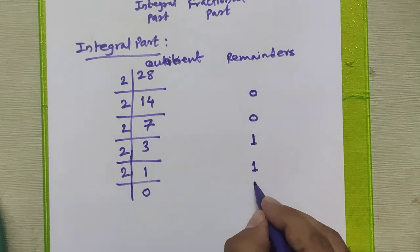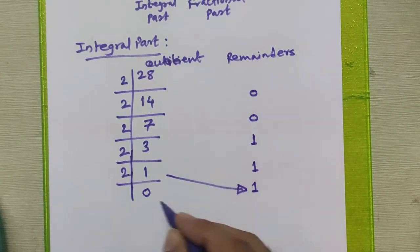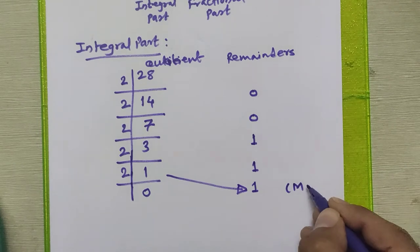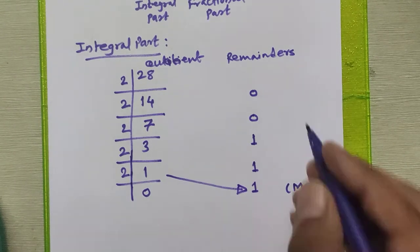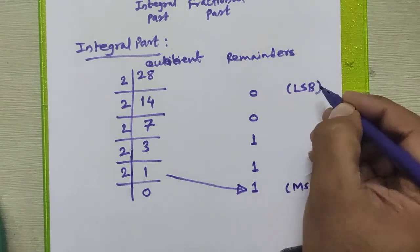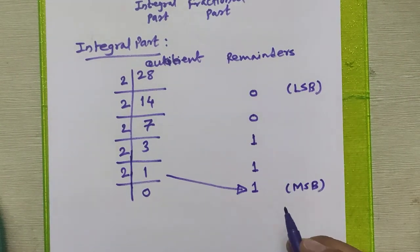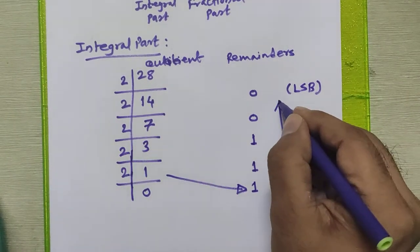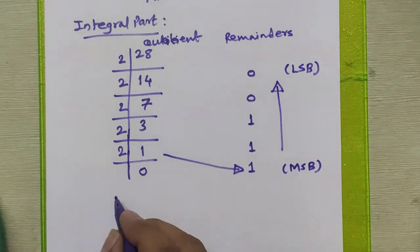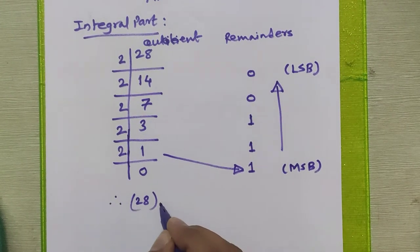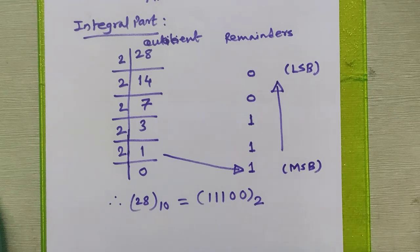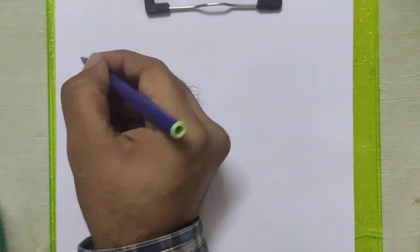In the last step we divide 1 by 2: the quotient becomes 0 and the remainder is 1. We stop the division process when the quotient becomes 0. The last remainder obtained is called the MSB (most significant bit), and the first remainder is called the LSB (least significant bit). Arranging these remainders from bottom to top, we get that 28 decimal is equivalent to 11100 in binary.